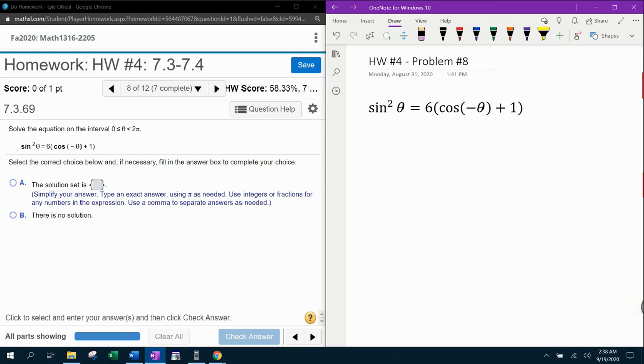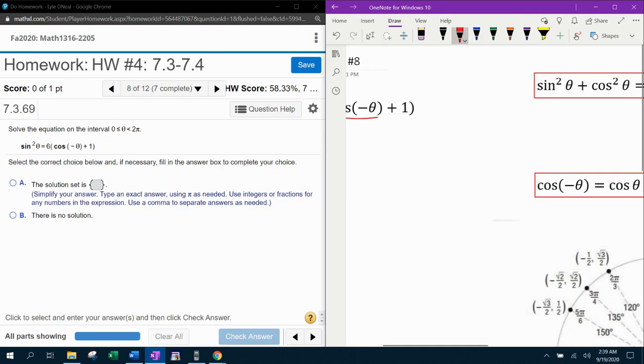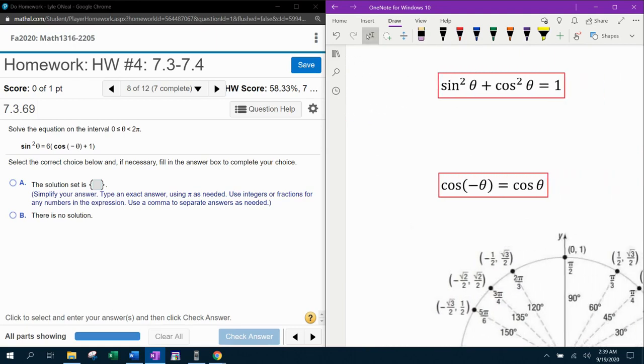So in order to deal with the cosine of negative theta, we're going to have to use an even odd property. And to convert the sine squared theta into cosine theta, we're going to have to use Pythagorean identity. And I have those listed right over here.